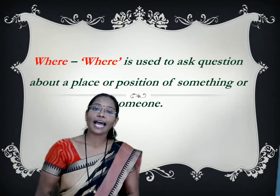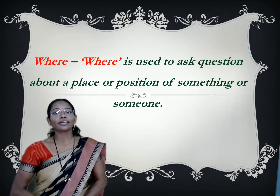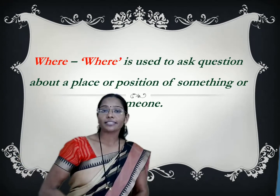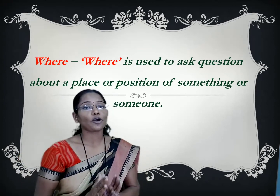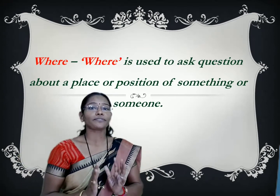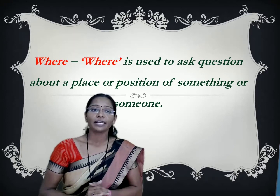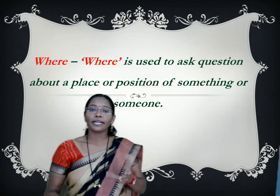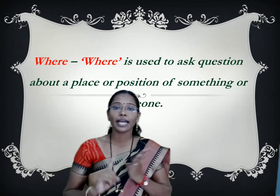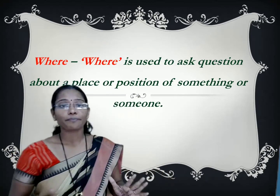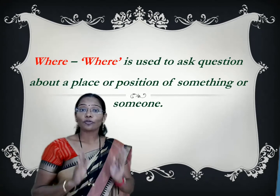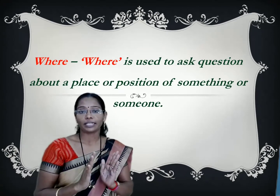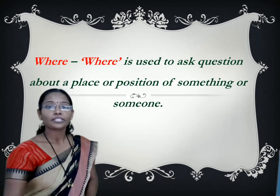So let us see the third question word, which is 'where'. The question word 'where' is used to ask questions about the place or position of something or someone. We can use 'where' to ask about the place of any non-living thing, living thing, animal, bird, or anything — but the question should be about the place or position of that particular thing.